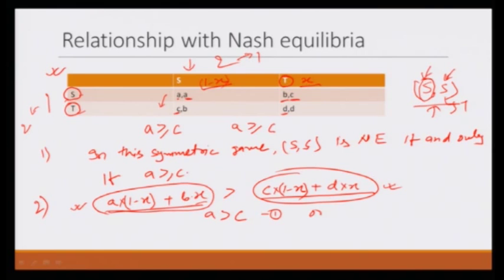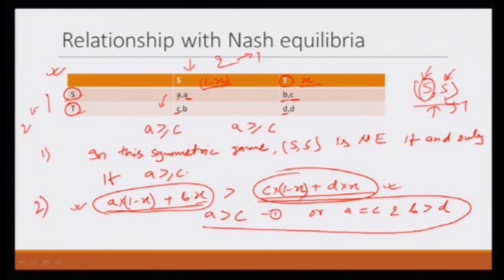So, in a symmetric game, (S, S) is a Nash equilibrium if and only if A ≥ C, where A, B, C, D are given in the bi-matrix described above. And in the same game, S is evolutionarily stable if A > C, or A = C and B > D. If we pay attention to these two criteria, they are very similar because they both contain this relationship between A and C.